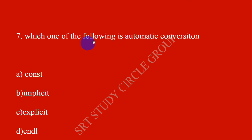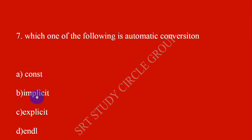Which of the following is automatic conversion? Which of the following is automatic conversion? The answer is implicit. Implicit is automatic conversion. Implicit versus explicit — implicit is the automatic one.